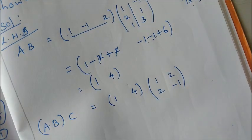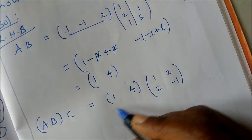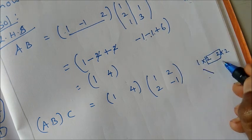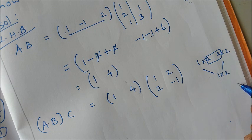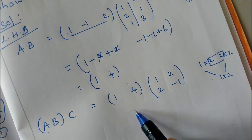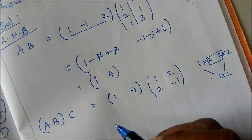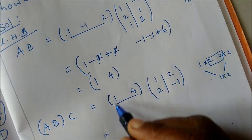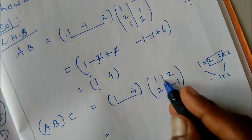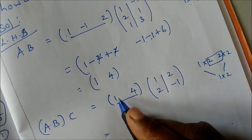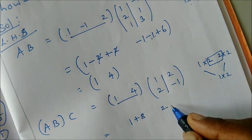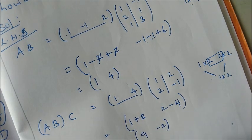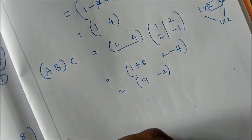Multiply AB=[2,−2] by C=[1,2;2,−1]. Sleeping line and standing line: first row first column: 1×1=1, plus 2×4=8 gives 9. First row second column: 1×2=2, minus 2×(−1) gives 2+2=4... result: 1×2 matrix. After adding and subtracting: (AB)C = [9, −2]. This is the left-hand side.